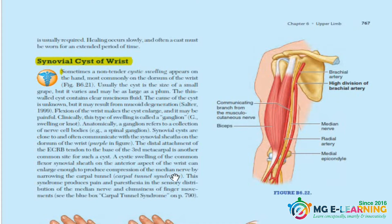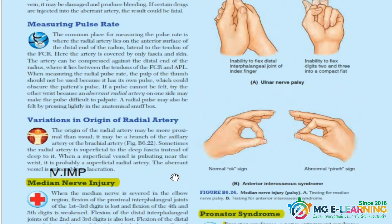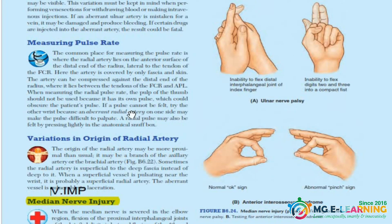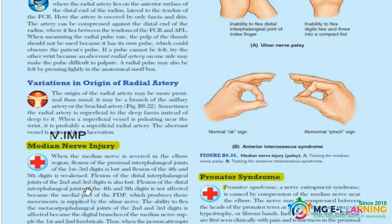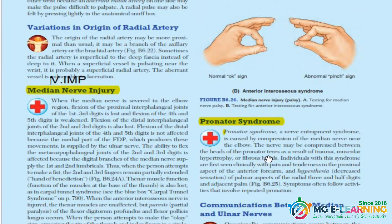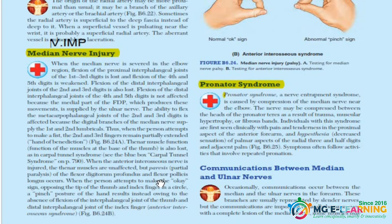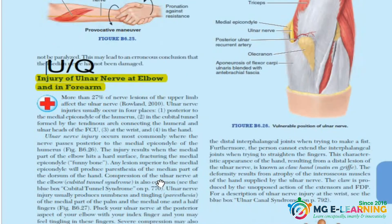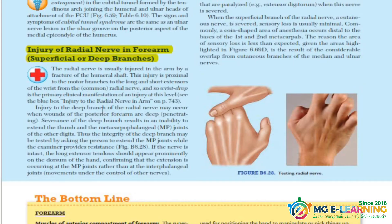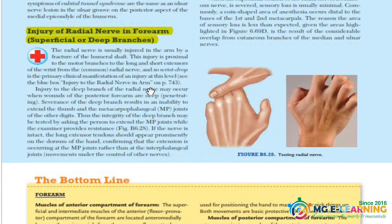Carpal tunnel — very, very important. Then we have median nerve injury — very important. The things which are not marked you should give them a read, but they are not that important. Then we have pronator syndrome — again very important. Then we have injury to the radial and ulnar nerve at the elbow and in the forearm — very important. Injuries of the radial nerve in the forearm and superficial radial branches — again very important, scenario-based questions do come from here.